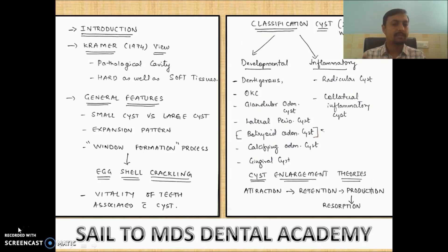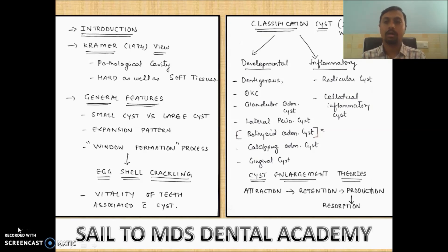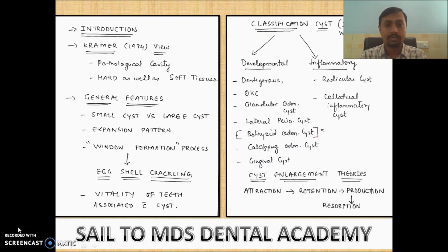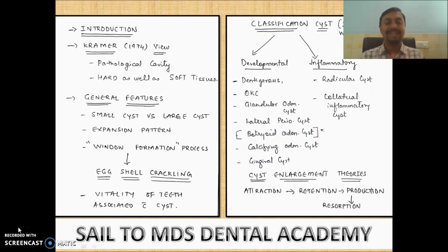Vitality of teeth is important: whenever you find a cyst and are trying to extract it, remember that in most cases the teeth are vital. For example, in dentigerous cyst, solitary cyst, odontogenic keratocyst, and lateral periodontal cysts the teeth are vital. But in inflammatory cysts like the radicular cyst and residual cyst, they are non-vital. So judge the vitality of teeth before treating. The latest WHO 2017 classification divides cysts into two types: developmental or inflammatory.